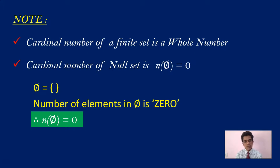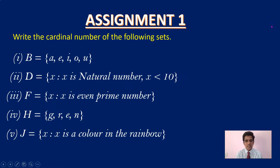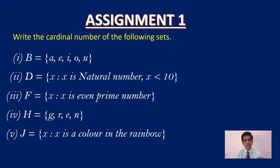This is your first assignment: write the cardinal number of the following sets. You just have to count the elements and write the number — n(V), n(D), n(F) — something like that.